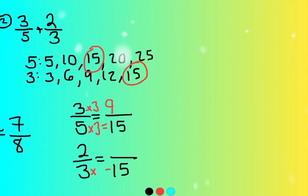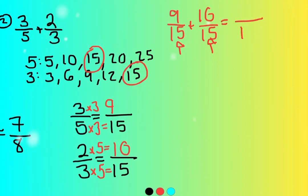Three times what gives me fifteen? Well, three times five gives me fifteen. Two times five is ten. So now I have two things I can work with. I now have nine fifteenths plus ten fifteenths. If I start with fifteenths, if I add fifteenths, I'm going to end with fifteenths. Nine plus ten is nineteen. And I simplify.